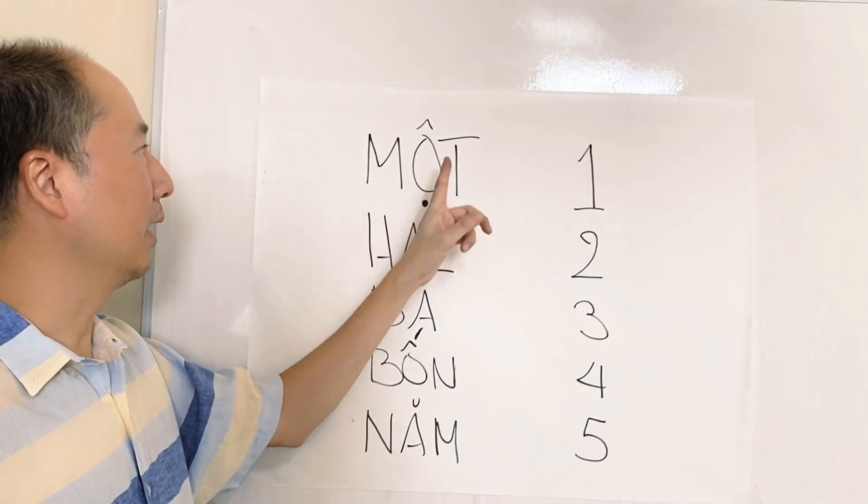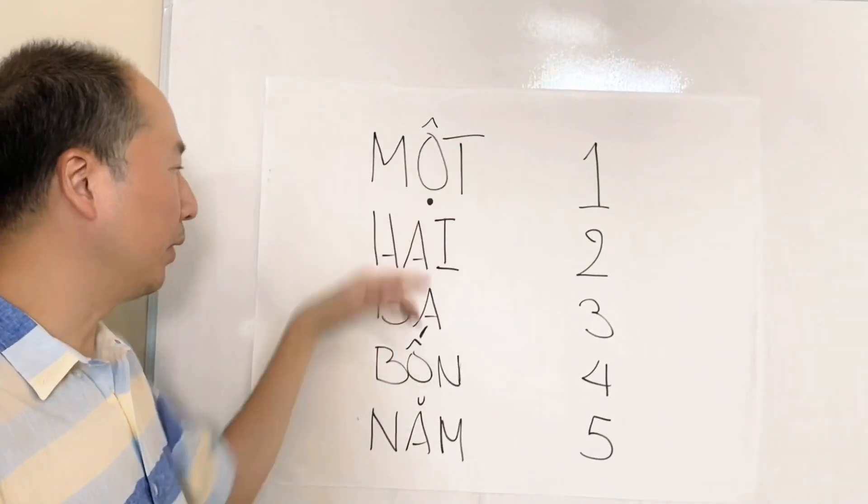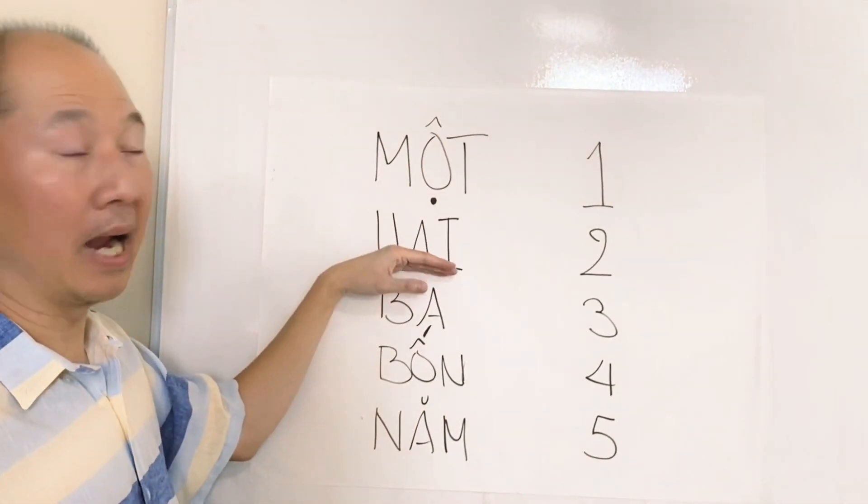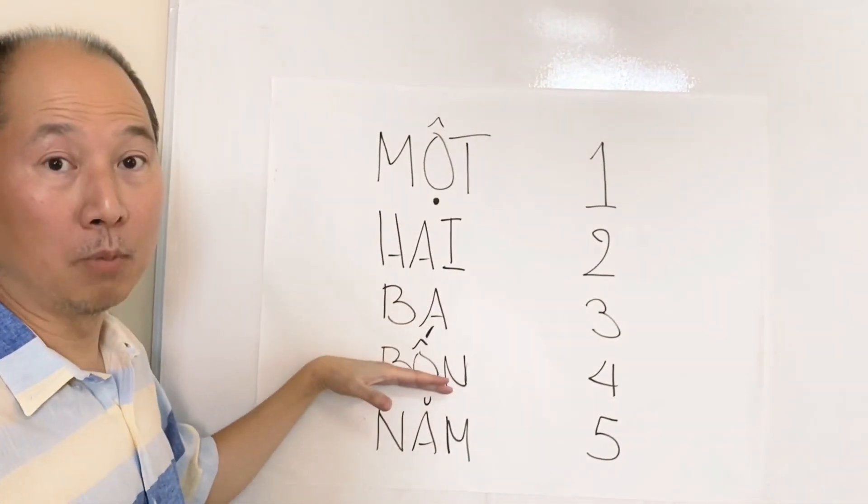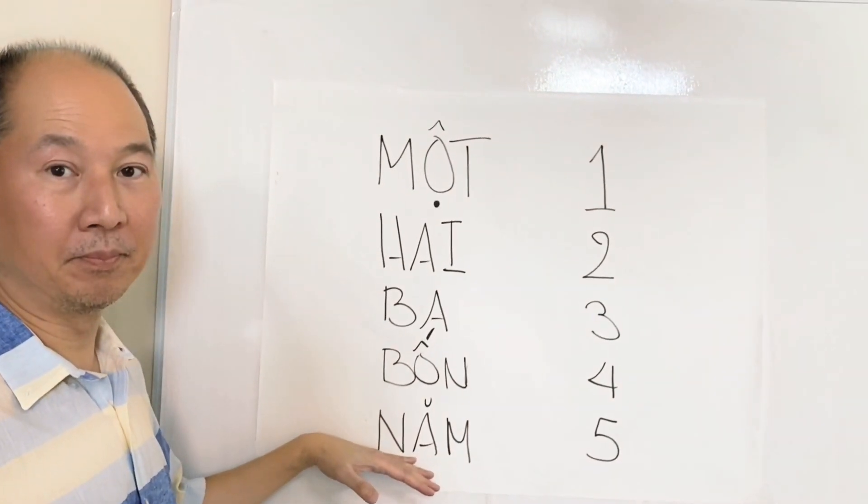Một. Now, one thing, so let me read the whole thing, I'll break down each one of these. Một, hai, ba, bốn, năm. All right? So let's start with the first one, which is number one.